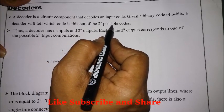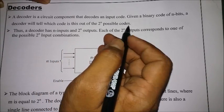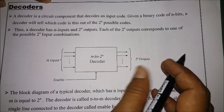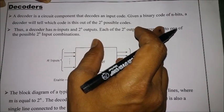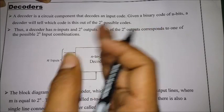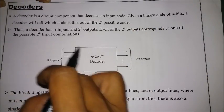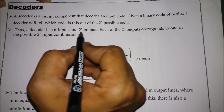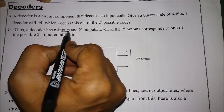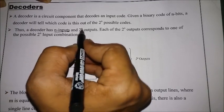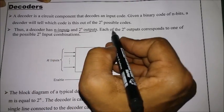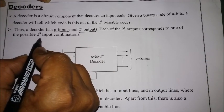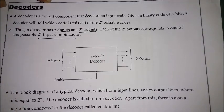Whenever a code is given, the decoder decodes it and finds out what the possible combination is for the given input. Thus, a decoder has n inputs and 2^n outputs. Each of the 2^n outputs corresponds to one of the possible 2^n input combinations.